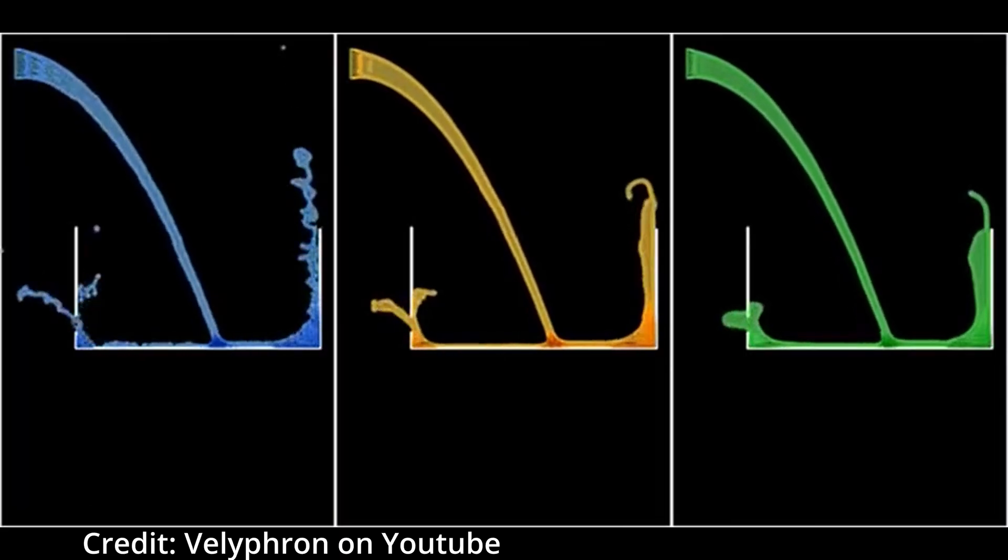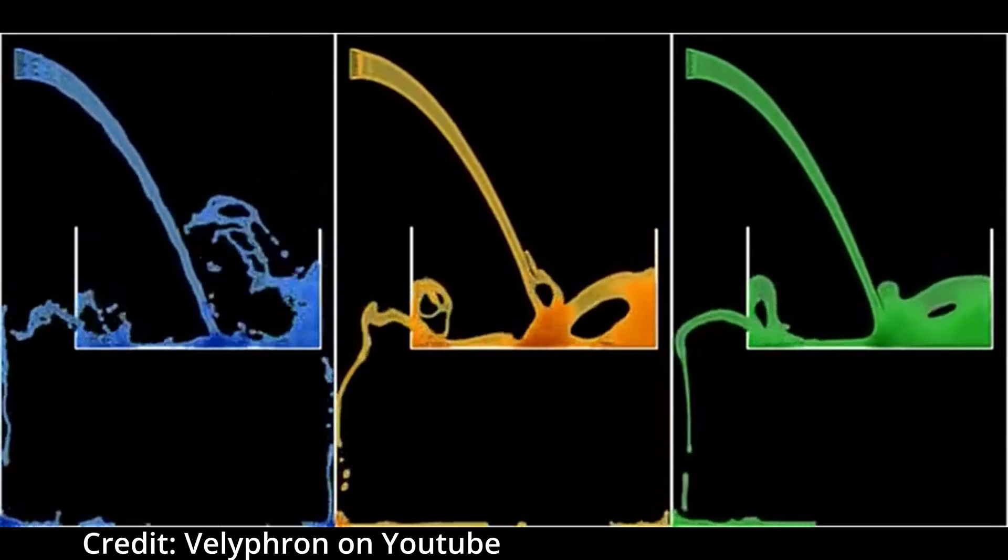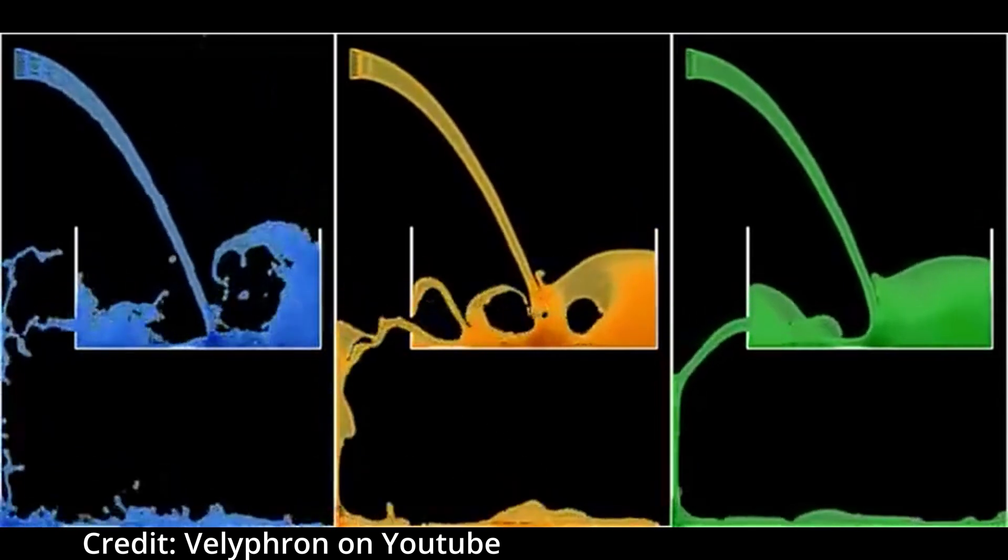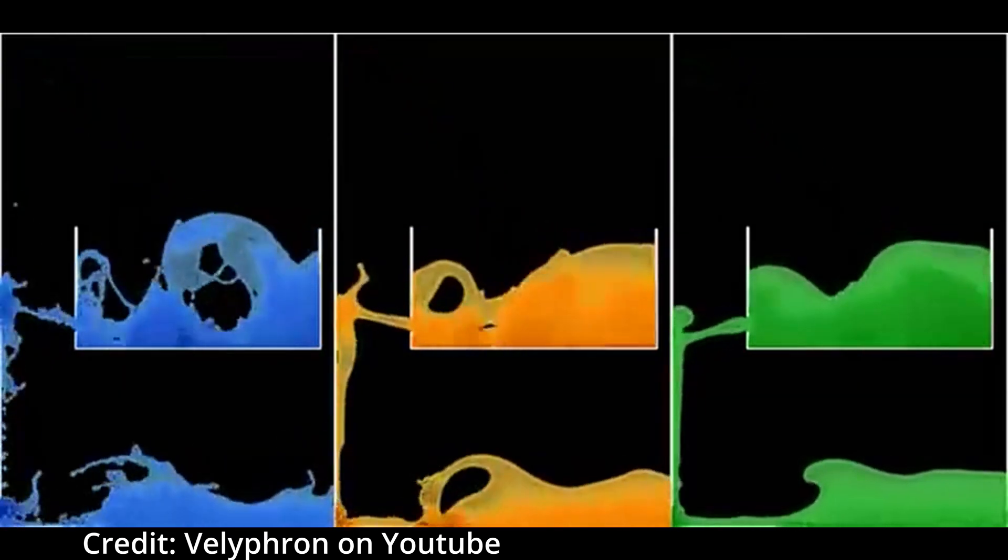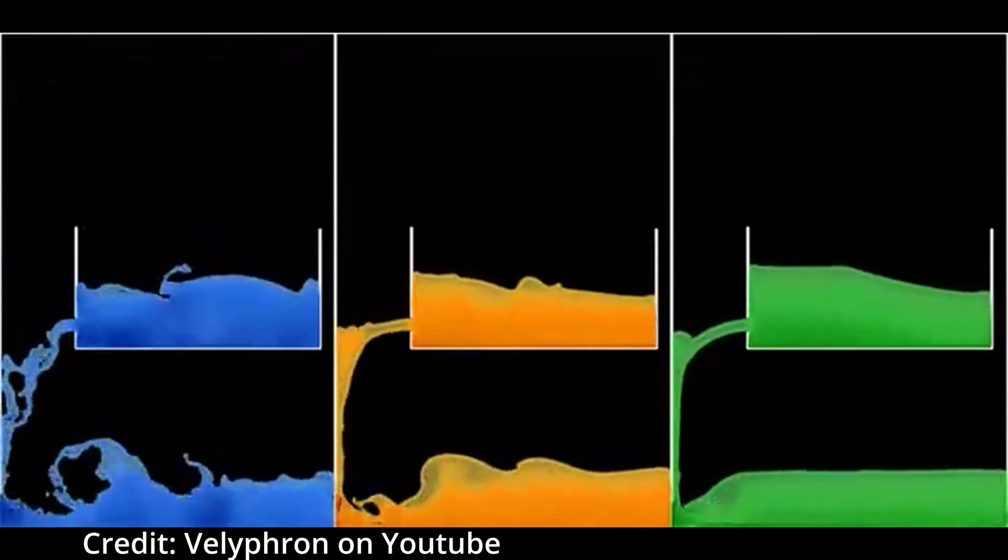As we can see in this video, the fluid on the left has the lowest viscosity, it moves closest to water, whereas the fluid on the right moves very slowly and is more viscous.